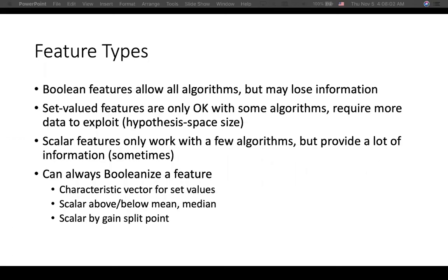Regarding feature types: boolean features allow all algorithms but may lose information. Set-valued features are only okay with some algorithms and require more data to exploit the hypothesis space size. Scalar features only work with a few algorithms but provide a lot of information. You can always booleanize a feature — using a characteristic vector for set values, a scalar above or below mean and median, or a scalar by gain split point.